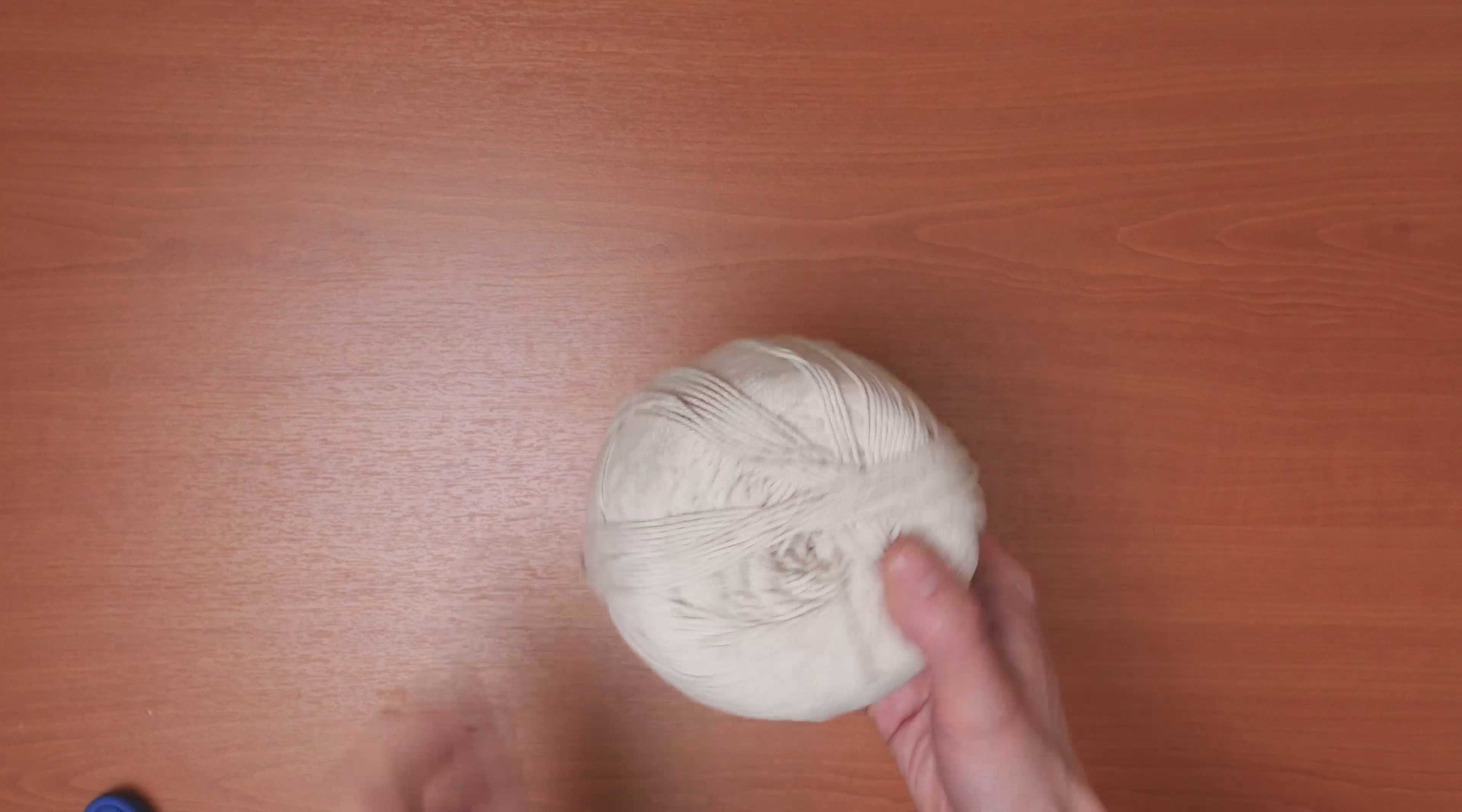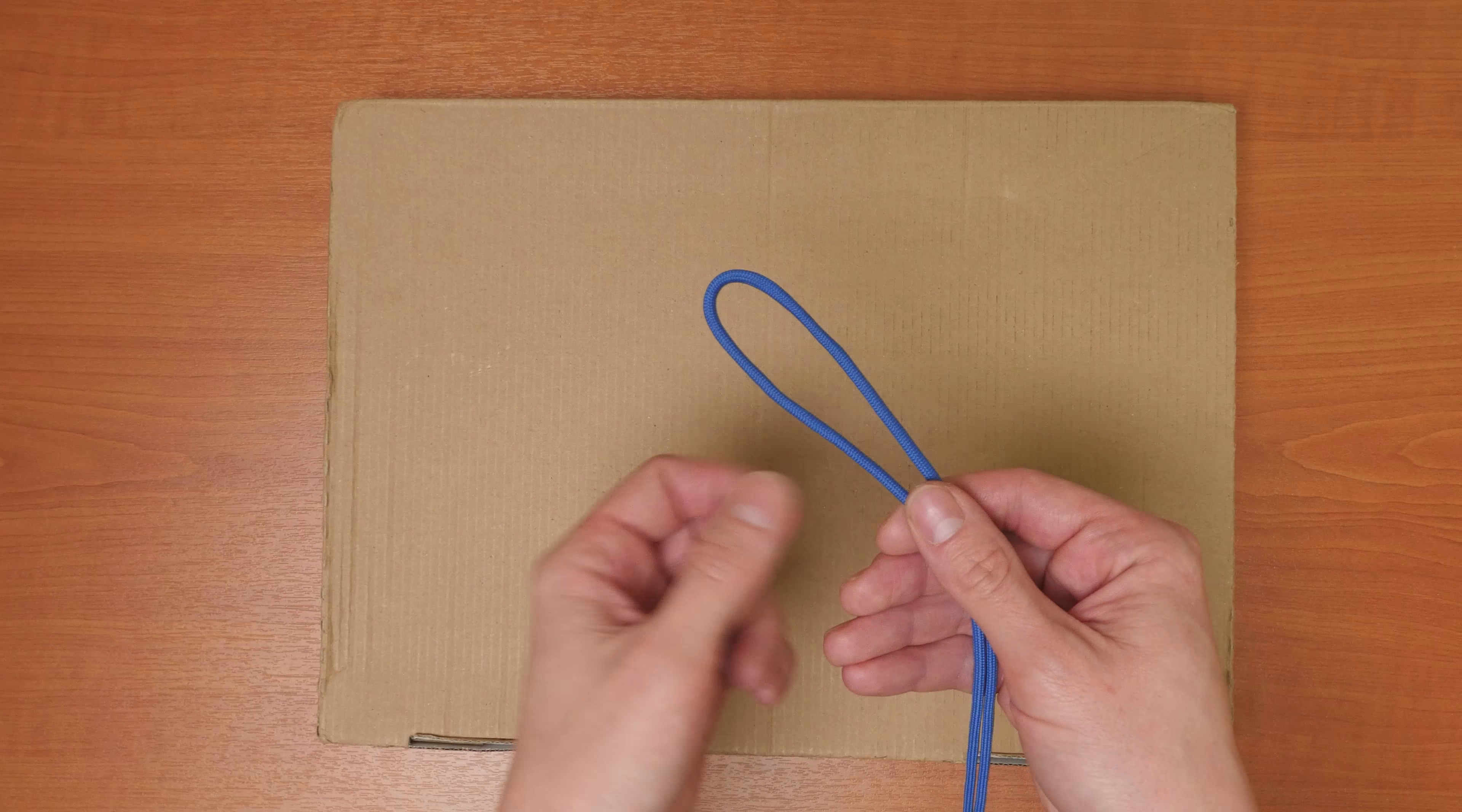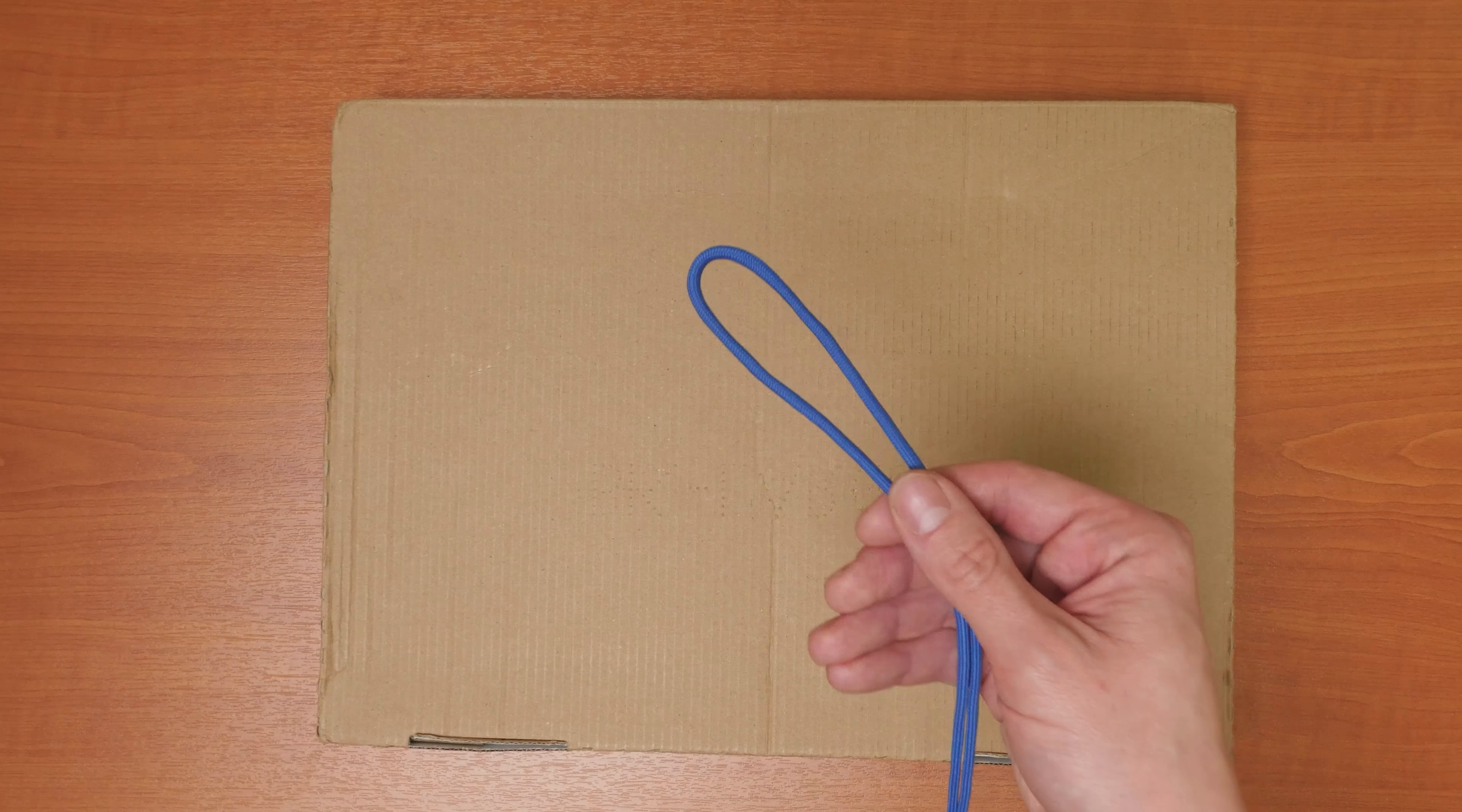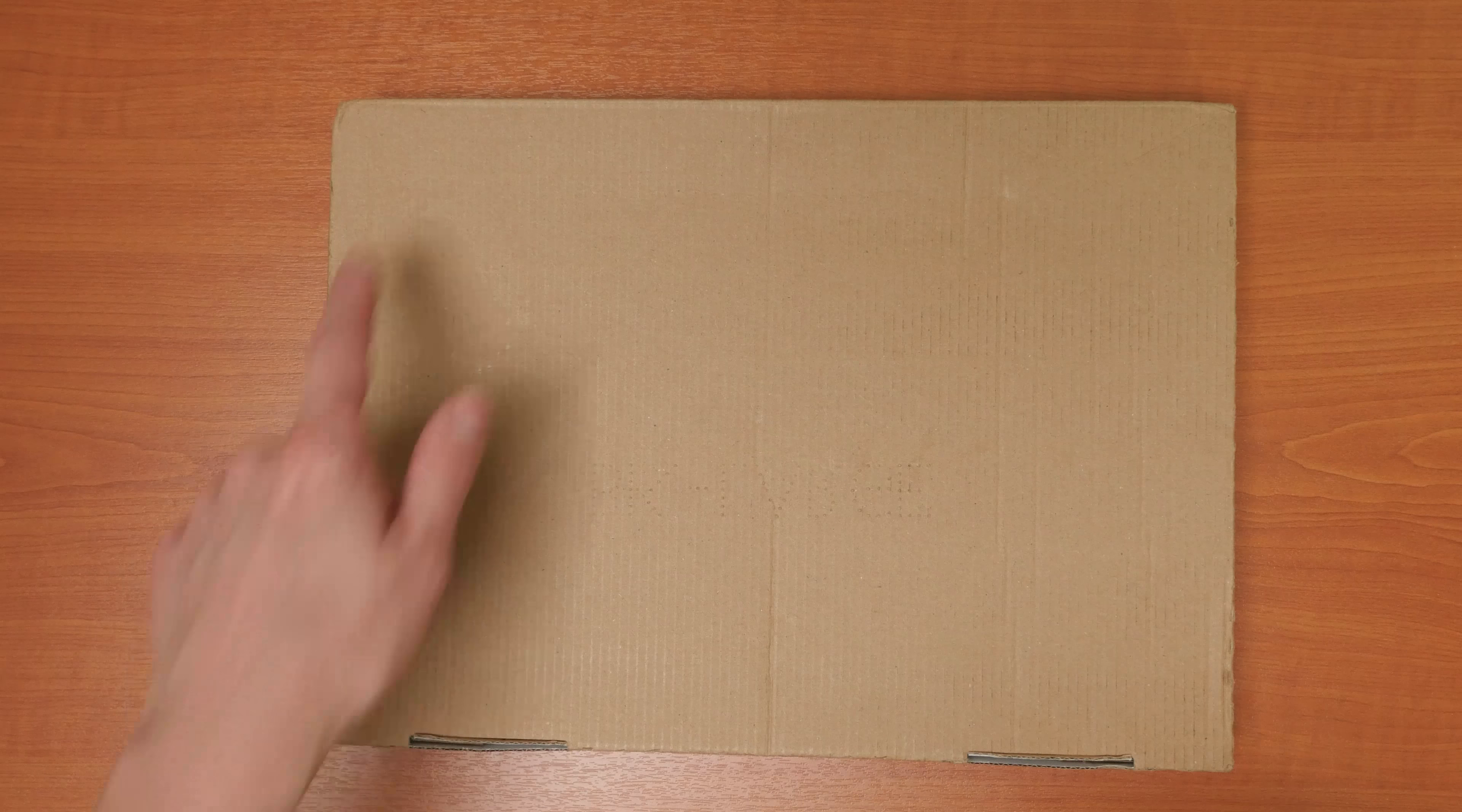To lash this package, I'm going to take my cord and fold it in half. This creates a bite at the center point. I'm now going to place this bite over one of the edges of the package. I'm going to travel under the package and place the bite over one of the edges.